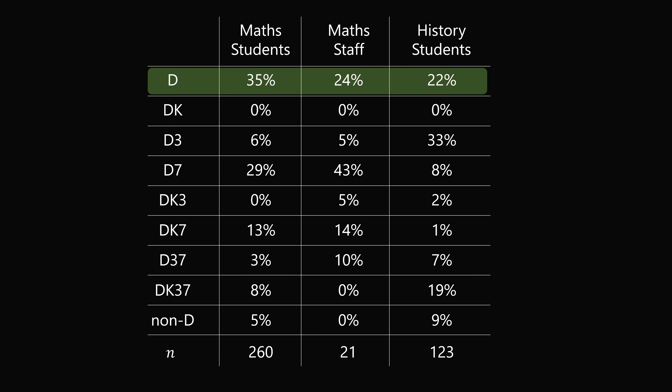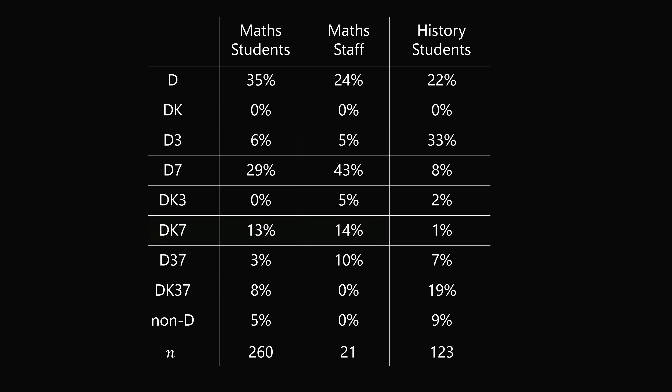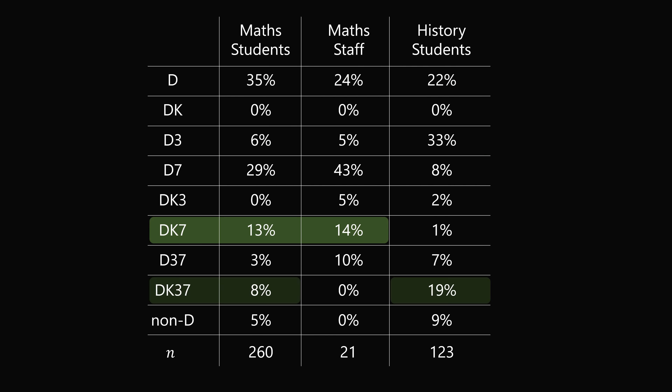So where were the common mistakes? Many people picked D alone, or D and 3 together. Others thought D, K, and 7. Some people thought to pick all four cards — which would actually be fine in practice if you're an employee wanting to verify every card, but it is not the correct minimal answer to the puzzle.